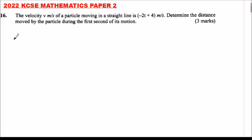2022 KCSE Mathematics Paper 2, Question number 16. The velocity v meters per second of a particle moving in a straight line is (-2t + 4) m/s. Determine the distance moved by the particle during the first second of its motion.